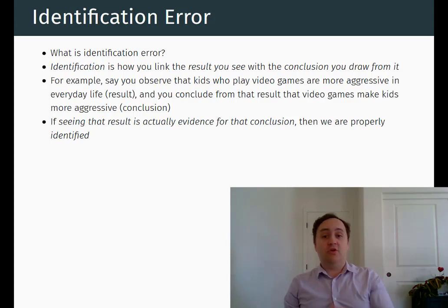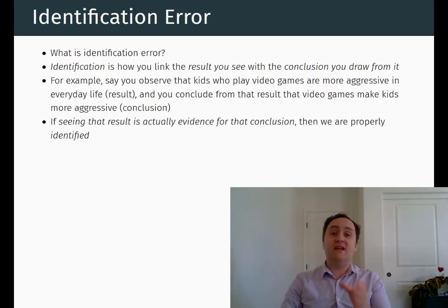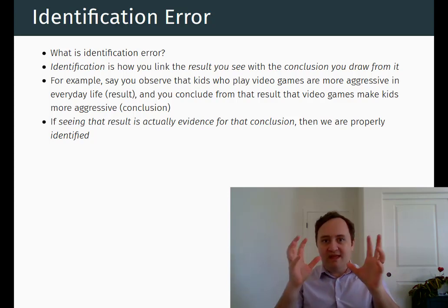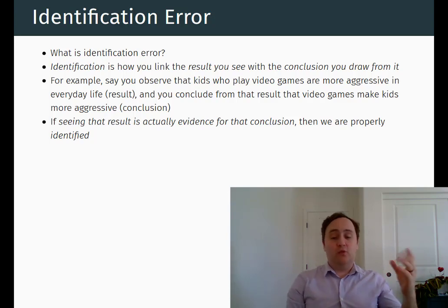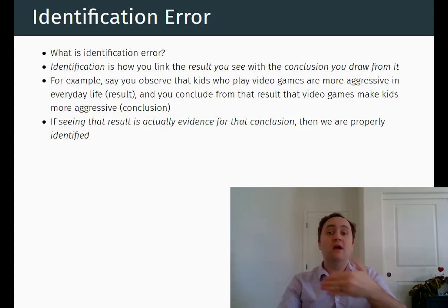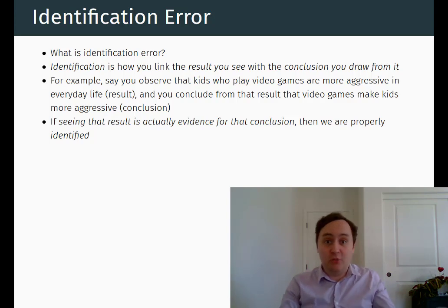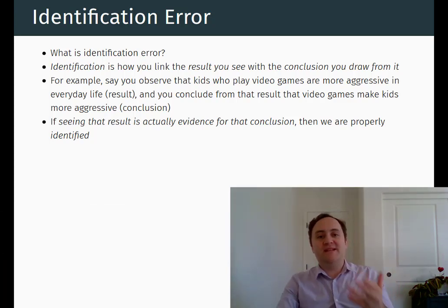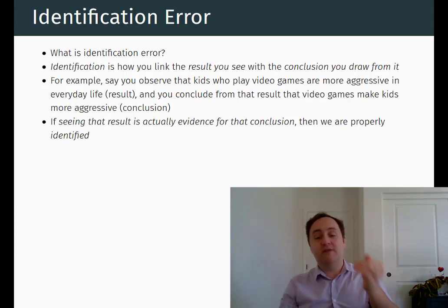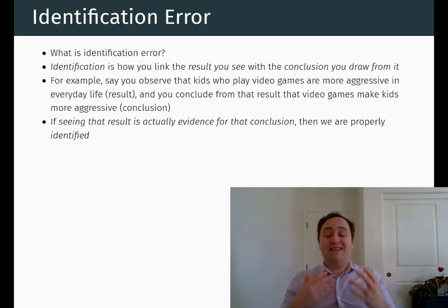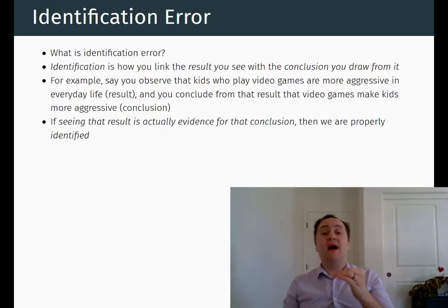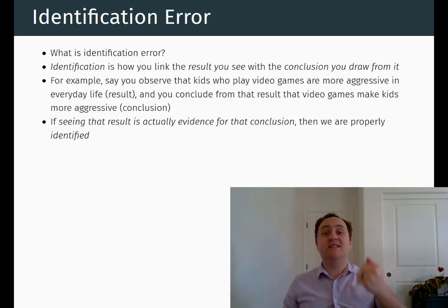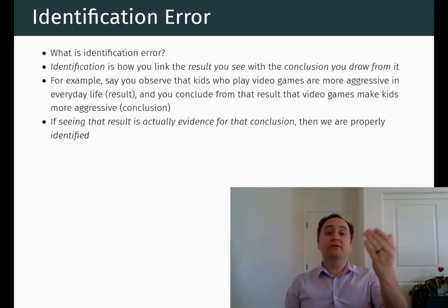So in order to combat identification error, economists have to think very carefully about the data generating process. We have to think about the reasons why two variables might be related to each other, and then make sure that we can account for those alternate explanations so that the only explanation that remains is the one that we are interested in. For example, in the ice cream and shorts case, maybe we just look at days that are hot — instead of comparing hot days to cold days, we only look at days that are hot, which gets rid of any variation in temperature. We are only looking at ice cream and shorts wearing within temperature, and so that would be a way of getting rid of that alternate explanation. And then we can see if, when that alternate explanation goes away, we still have a relationship. That's one way we can deal with identification error: by thinking carefully about the data generating process and getting rid of alternate explanations.